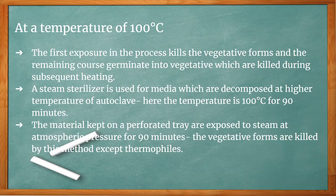In tyndallization, the first exposure kills the vegetative forms, and the remaining spores germinate into vegetative forms which are killed during subsequent heating. A steam sterilizer is used for media which decompose at the higher temperatures of the autoclave, at 100 degrees Celsius for 90 minutes. The material on a perforated tray is exposed to steam at atmospheric pressure, killing vegetative forms except thermophiles.